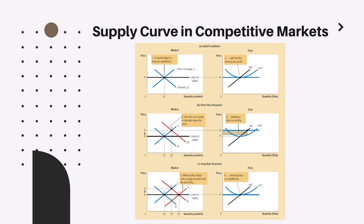If other players understand that this market generates extra profits, they will be incentivized to enter. As shown in the fifth graph representing the market, new suppliers entering cause the supply curve to shift, which decreases the price and eventually brings it back to the initial level. From the perspective of the single firm, we return to the same price and same cost — ultimately the same graph as initially. The idea is that extra profit in competitive markets is possible only in the short run, because market forces bring everything back to balance.